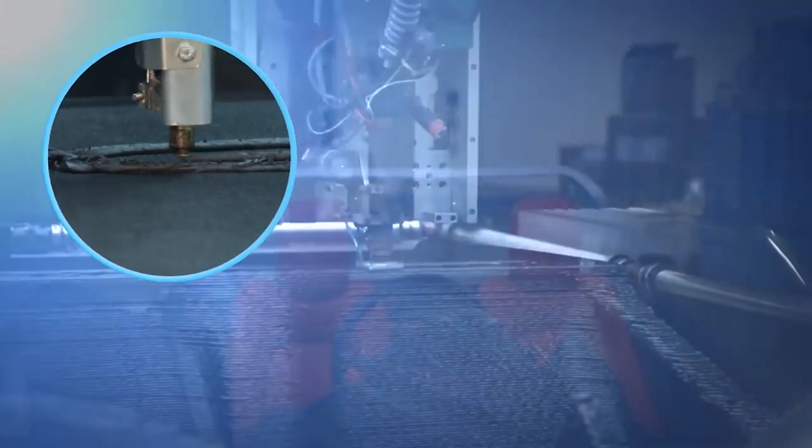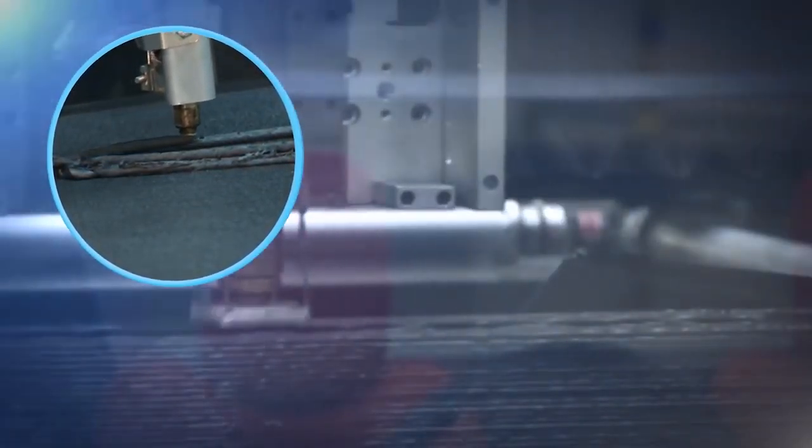Now, the instrument takes that laser and rasters it through the liquid, much like a 3D printer rasters a squirt nozzle extruding polymer. But in this case, the laser converts the liquid to a solid.